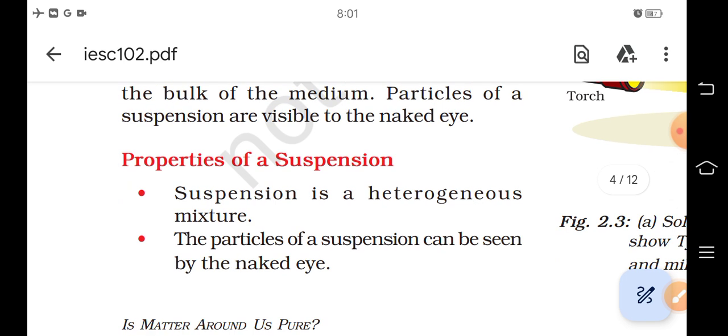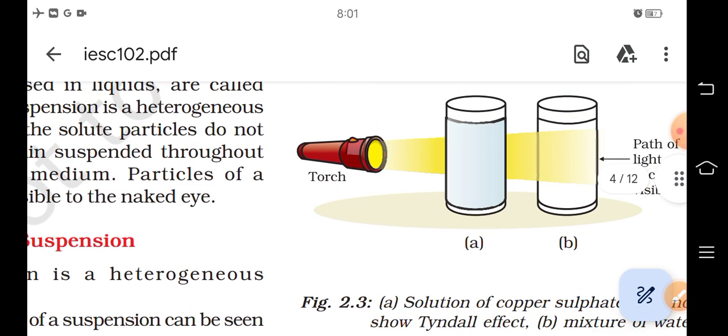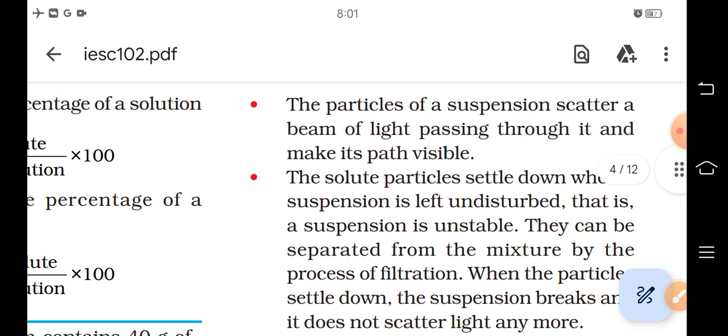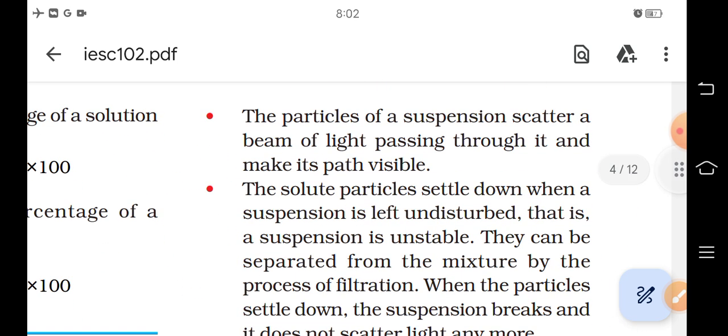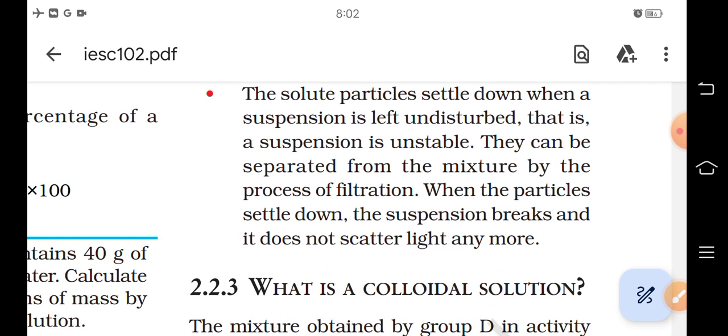Properties of a suspension: Suspension is a heterogeneous mixture. The particles of a suspension can be seen by the naked eyes. The particles of a suspension scatter a beam of light passing through it and make its path visible. The solute particles settle down when a suspension is left undisturbed, i.e. a suspension is unstable. They can be separated from the mixture by the process of filtration. When the particles settle down, the suspension breaks and it does not scatter light anymore.